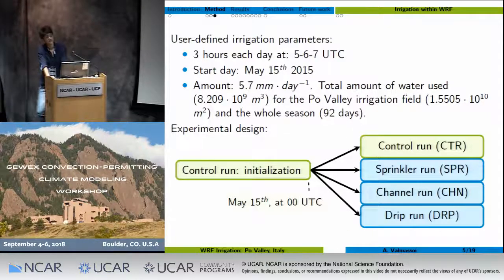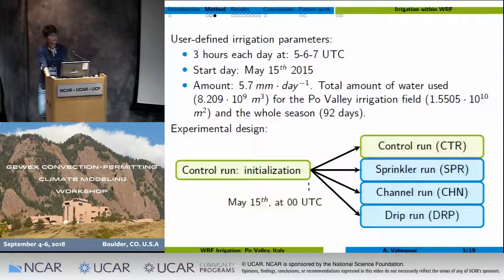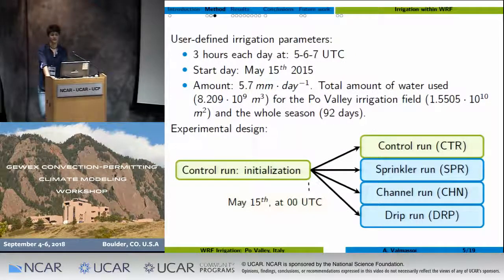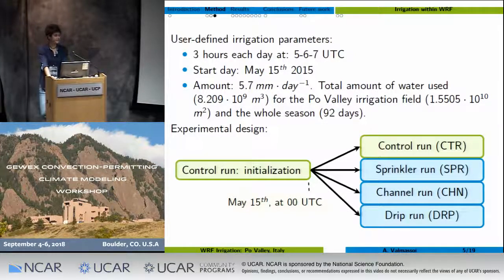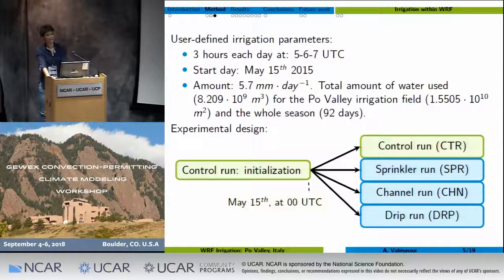There are some user-defined quantities that regulate irrigation. I irrigate three hours each day starting from May 15th. The amount is derived from Eurostat values and will be 5.7 millimeters per day, equally divided over the three hours. The control run starts on May 1st, then on May 15th we have the fork — irrigation starts. I will analyze results from June 1st to avoid any non-equilibrium state in the soil moisture.